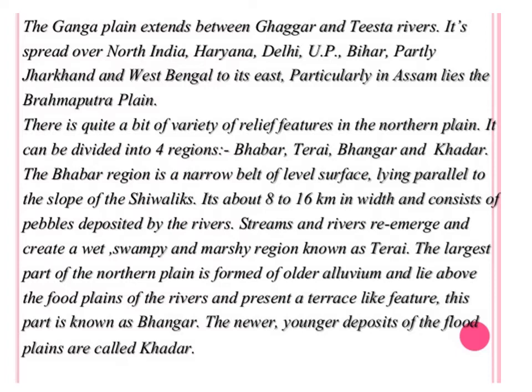The third river system is the Brahmaputra river system, which lies in Assam and is known as the Brahmaputra Plain. So these are the three rivers making the North Plain of India: first Indus, second Ganga, and third Brahmaputra.